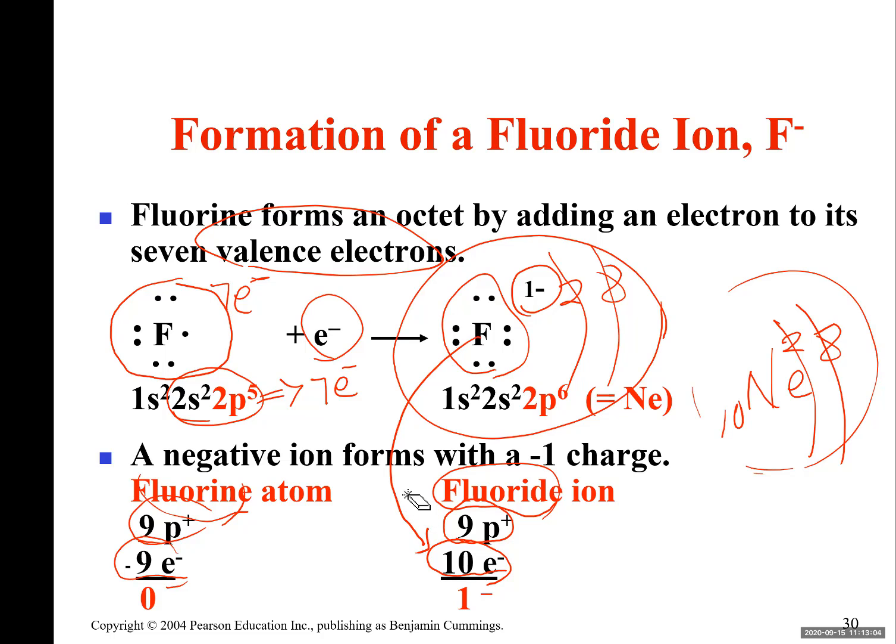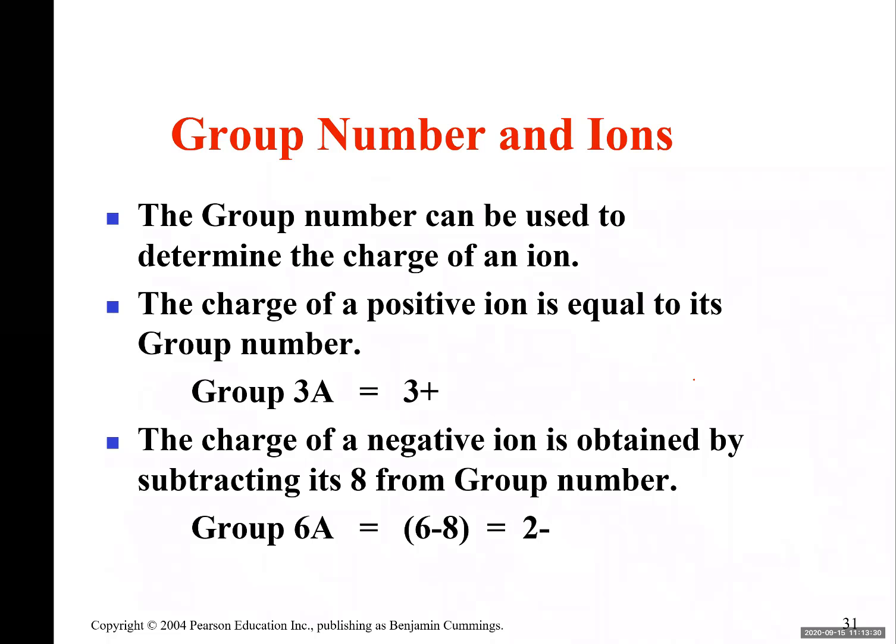That means 10 negative charge, total charge is negative one. So now we have got F minus, which is an ion. F minus is called an ion with negative charge.